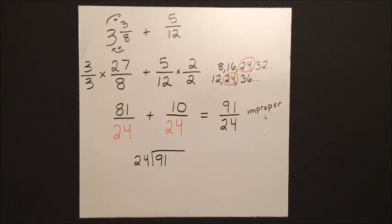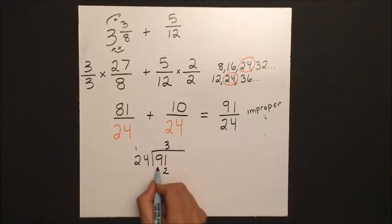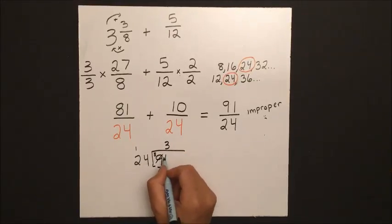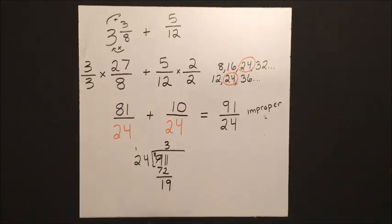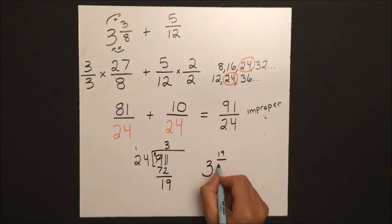So an easy way to remember which number goes on the inside of the division house is the phrase, top dog goes in the house. And our final answer, 3 and 19 24ths.